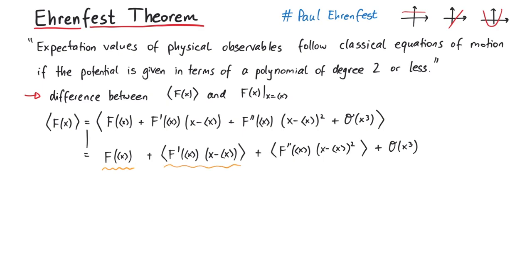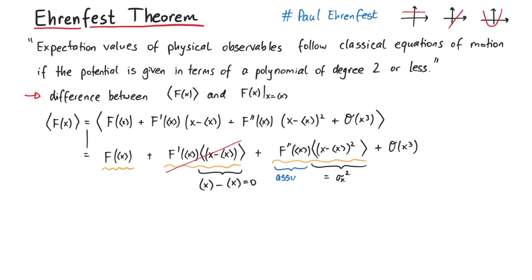In the second term, f' of the expectation value of x is also just a number, therefore we can write this outside of the expectation value. Next, the expectation value of x minus its expectation value is equal to the expectation value of x minus itself, therefore this term vanishes. In the third term, we can write the force again outside of the expectation value, and the term next to it is exactly the definition of the variance of x.